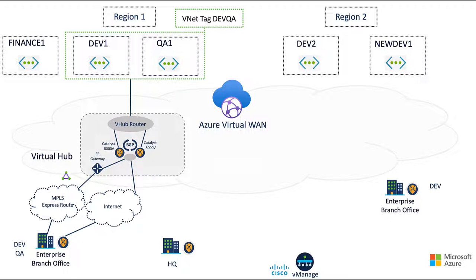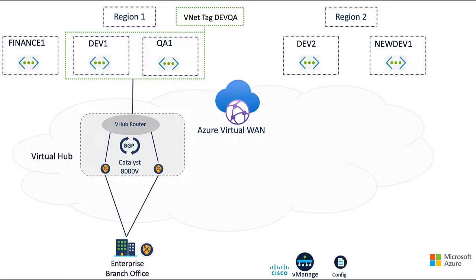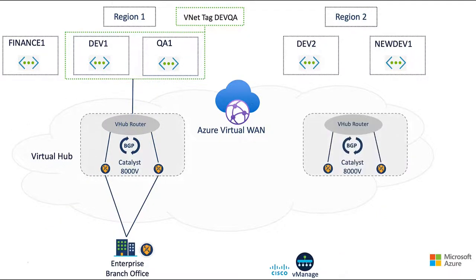When we talk about secure encrypted IPsec connectivity between our branches and our cloud gateways, it's important to note that we have several transport options. We can use the public internet, ExpressRoute, MPLS, or any combination, all controlled via policies and routing. We can easily replicate this topology and controls into other Azure regions. Since the virtual hubs are part of the same virtual WAN, they will be automatically globally connected using the Azure Virtual WAN backbone.